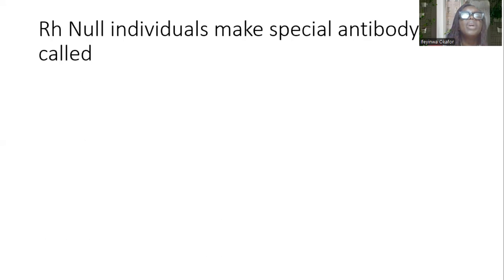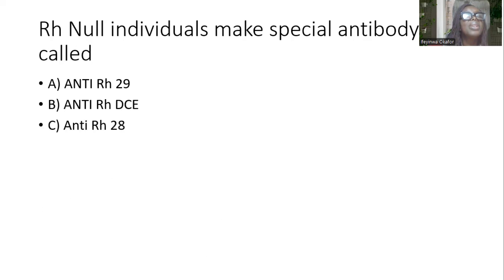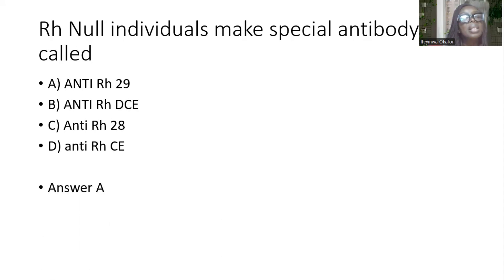RH-null individuals make a special antibody called: anti-RH29, anti-RH-DCE, anti-RH28, or anti-RH-CE? And the answer is A — anti-RH29.